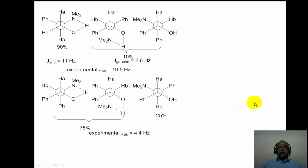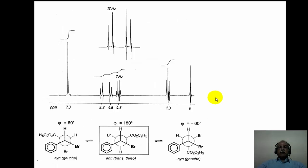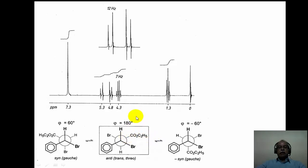Another example is a dibromocinamic acid derivative. The most stable conformers have the two bromines anti with respect to each other, so the two hydrogens are also anti in the threo isomer, and the experimentally observed coupling constant between the vicinal hydrogens is about 12 Hz. The NMR spectrum shows these two hydrogens as an AB quartet, and the CH2 of the ethyl ester group as a simple quartet. This confirms the anti conformer as the most predominant species in solution.